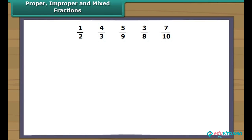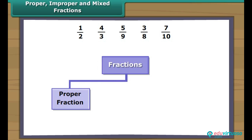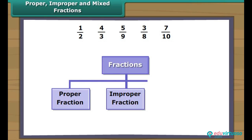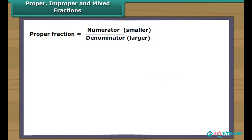We know that a fraction is a number representing a part of a whole. Fractions are of three types: proper fraction, improper fraction, and mixed fraction. In a proper fraction, the numerator is less than the denominator.